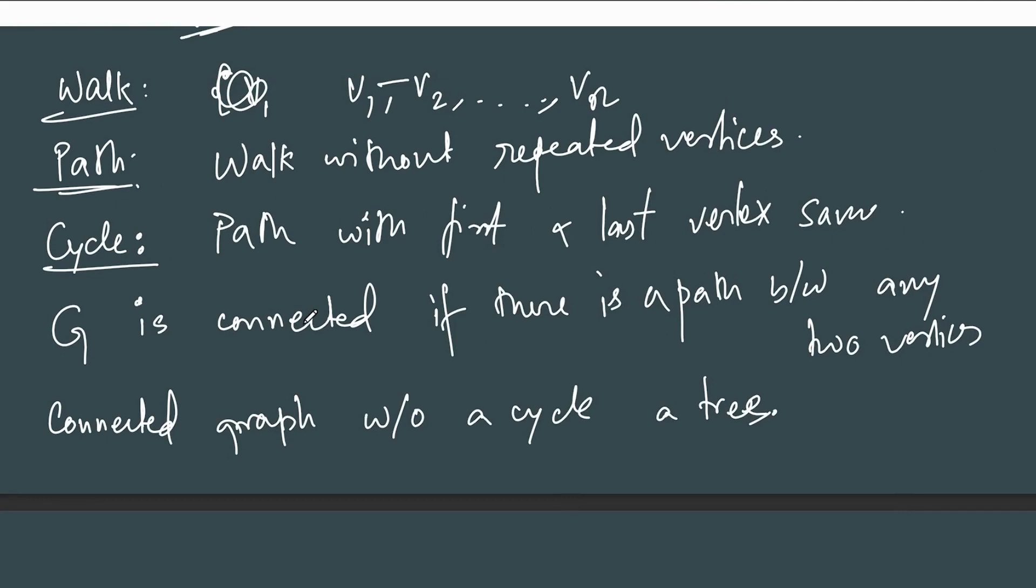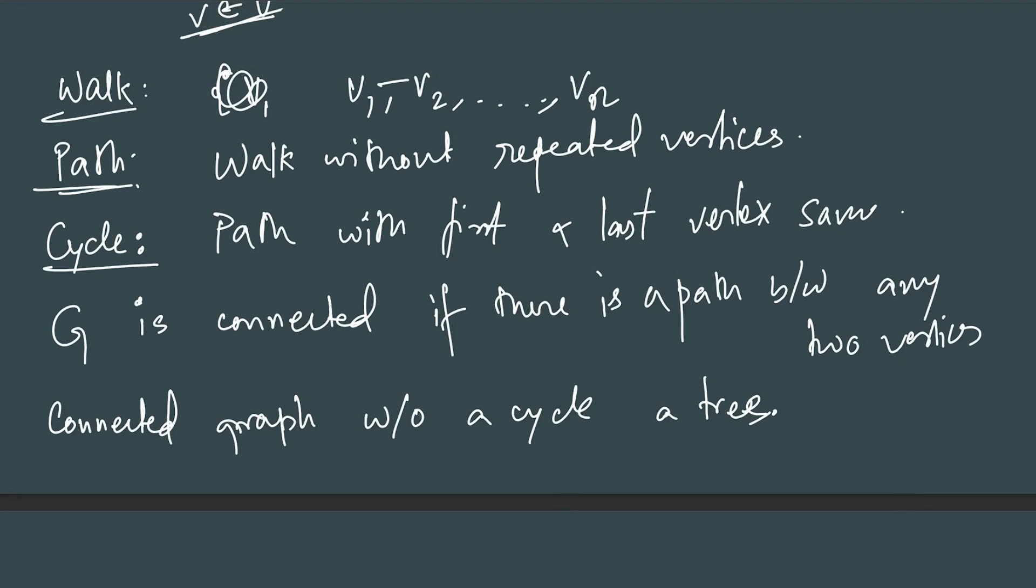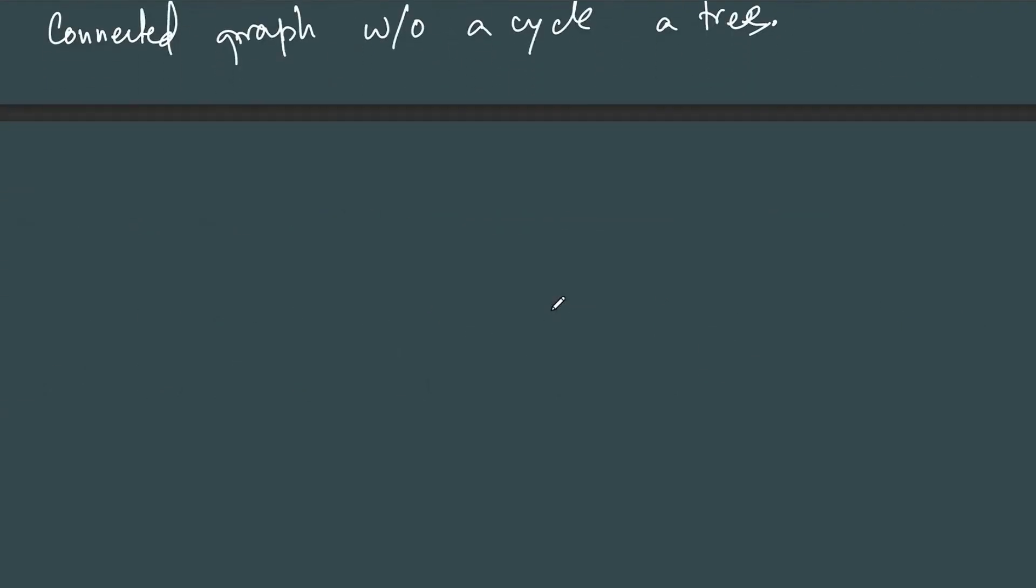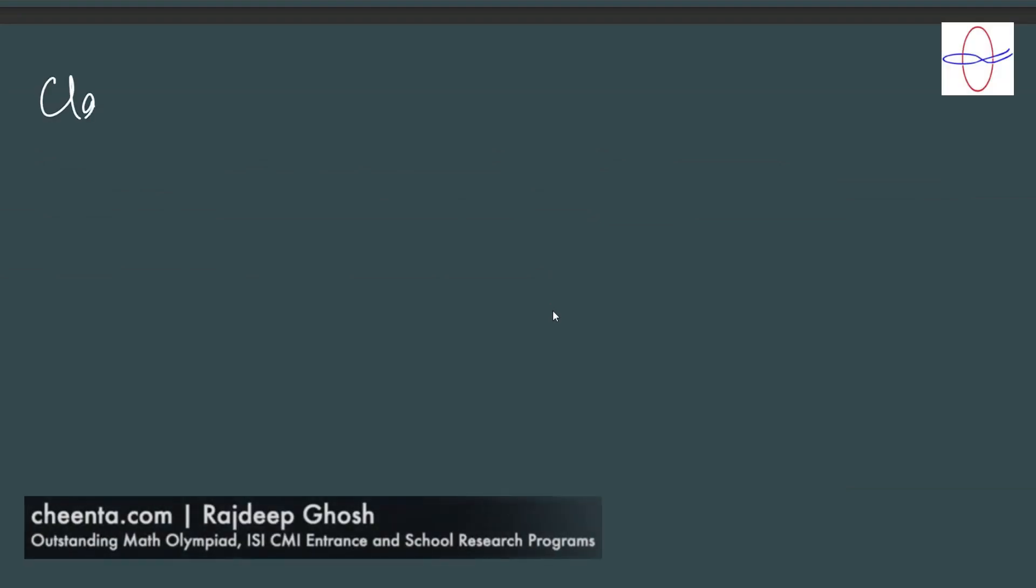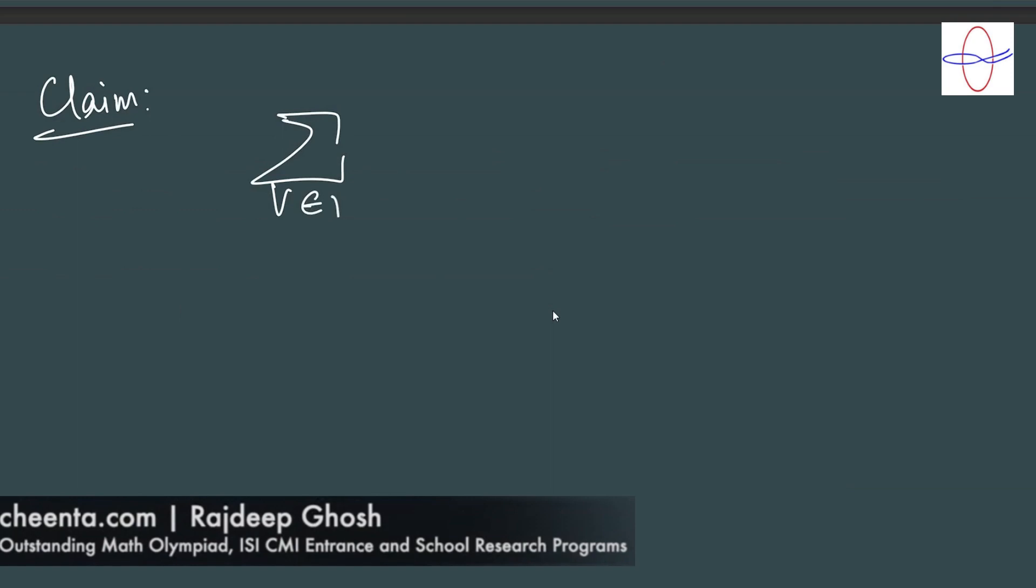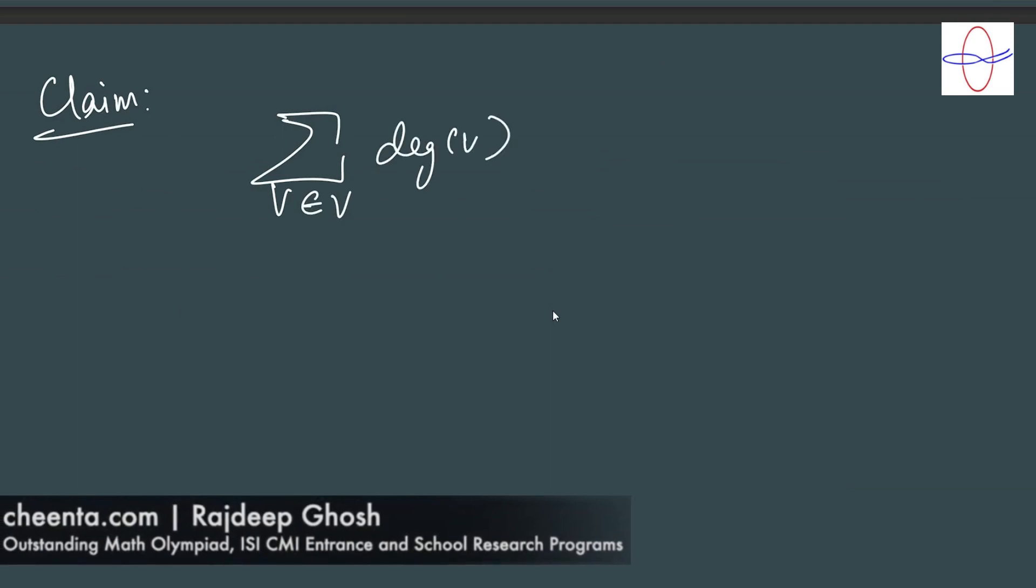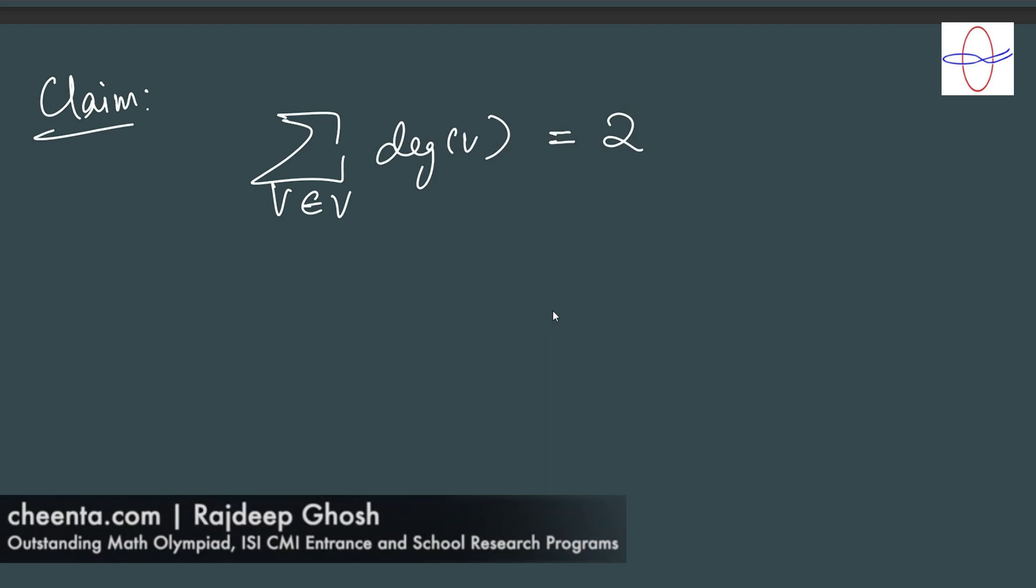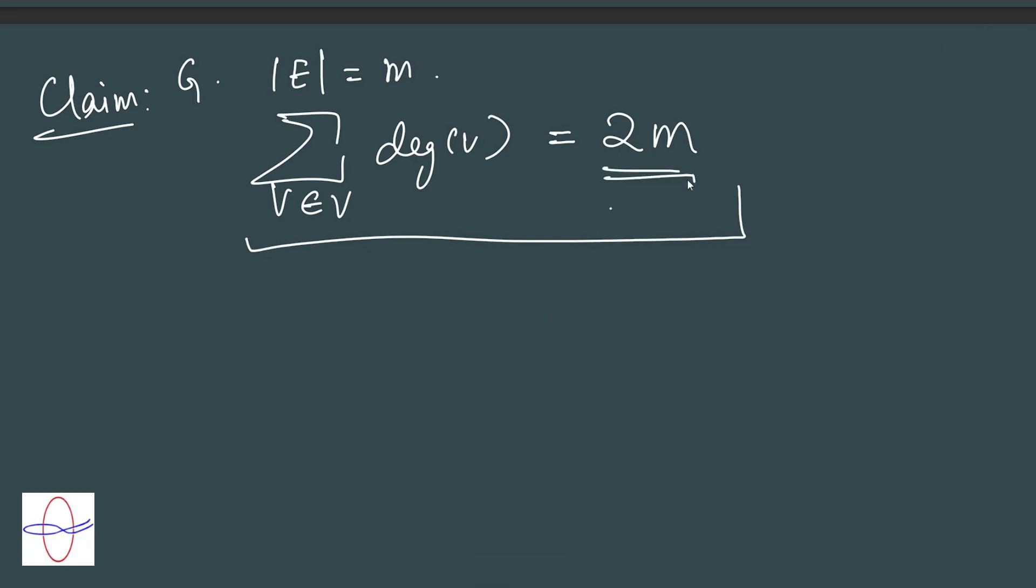We set up a lot of notation. We won't need all of this for the handshaking lemma. Let's just go ahead and prove it. Here's a claim: the net degree sum is always even. In fact, it's twice the number of edges. If in a graph G the number of edges is M, then the degree sum over every single vertex is actually 2M.